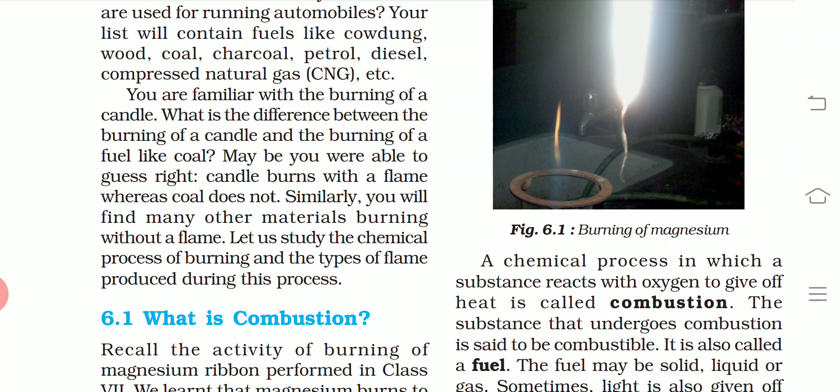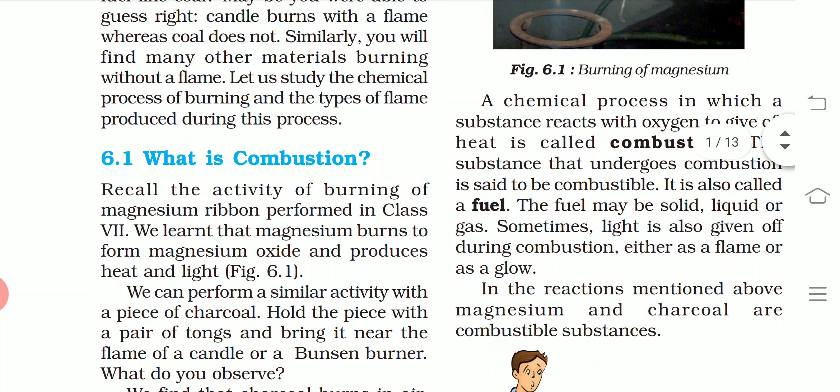Now, what is combustion? Recall the activity of burning a magnesium ribbon performed in Class 7. We learned that magnesium burns to form magnesium oxide and produces heat and light. When we burn the magnesium ribbon, we found that it produced both heat and light. We can perform a similar activity with a piece of charcoal.